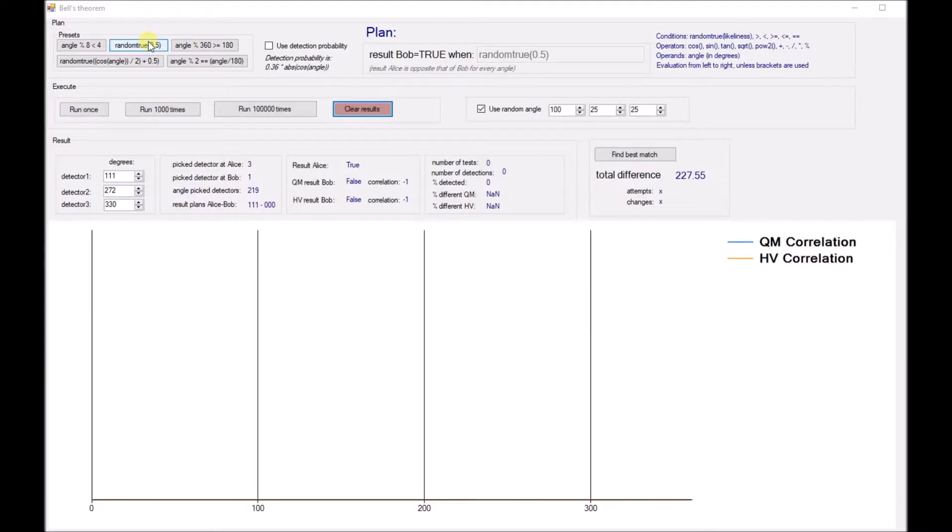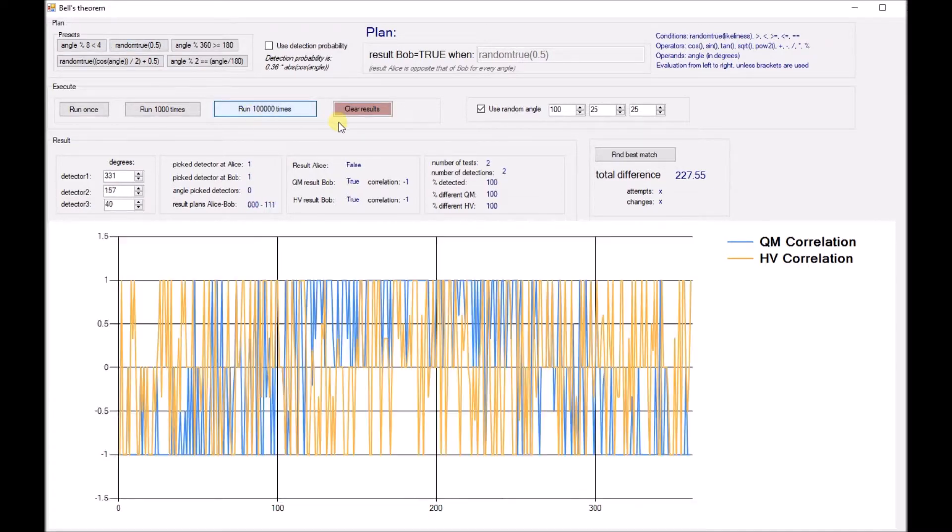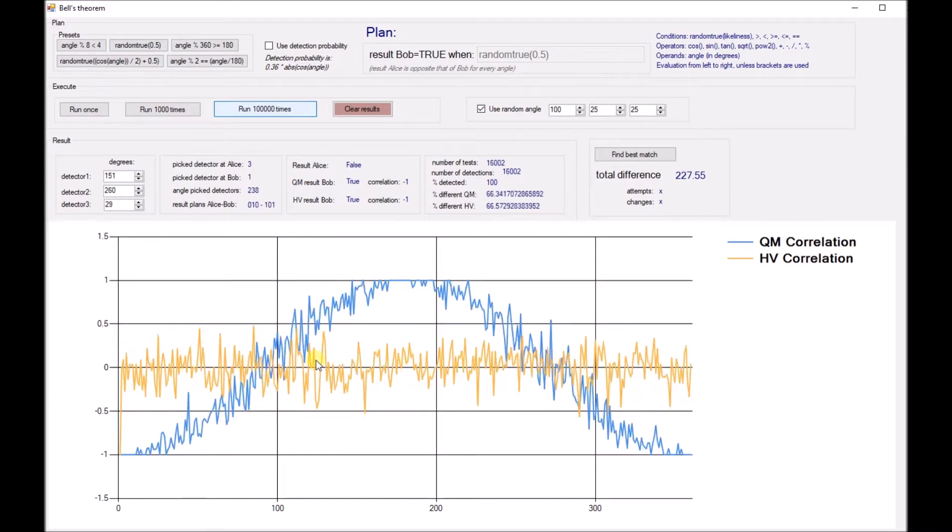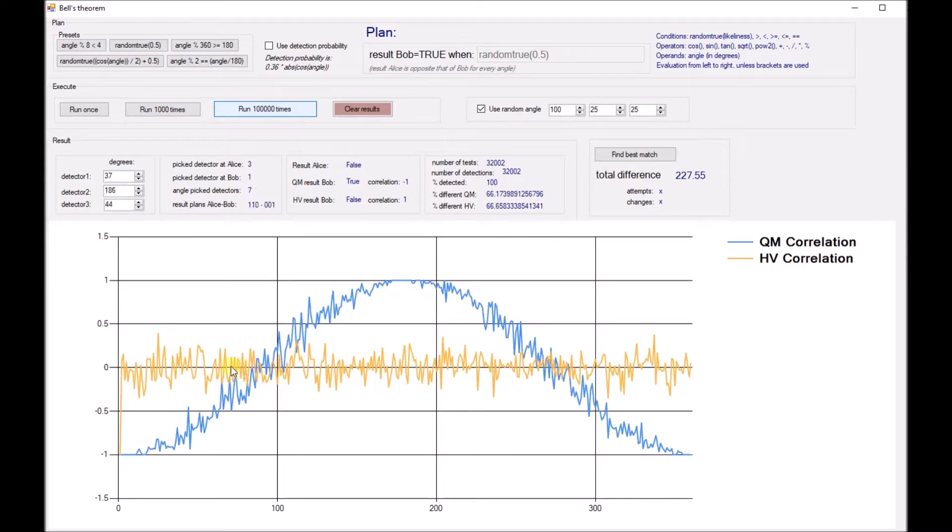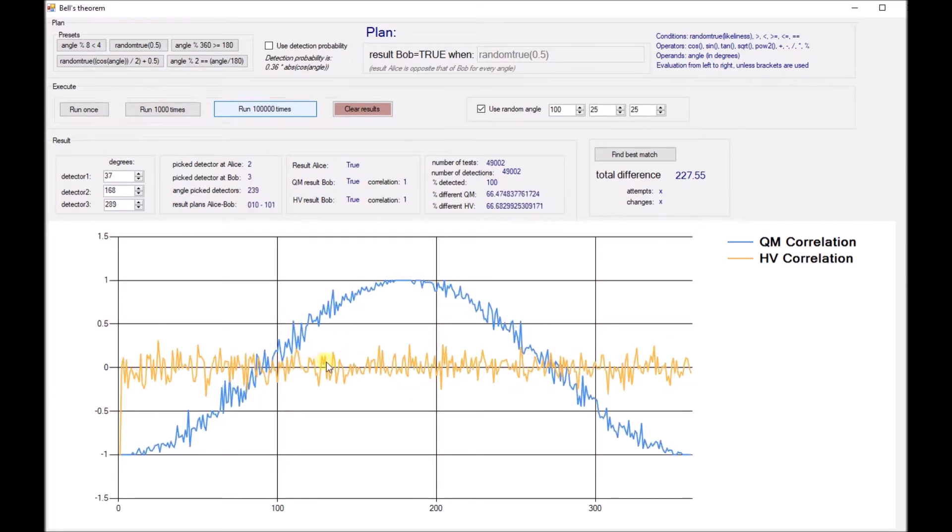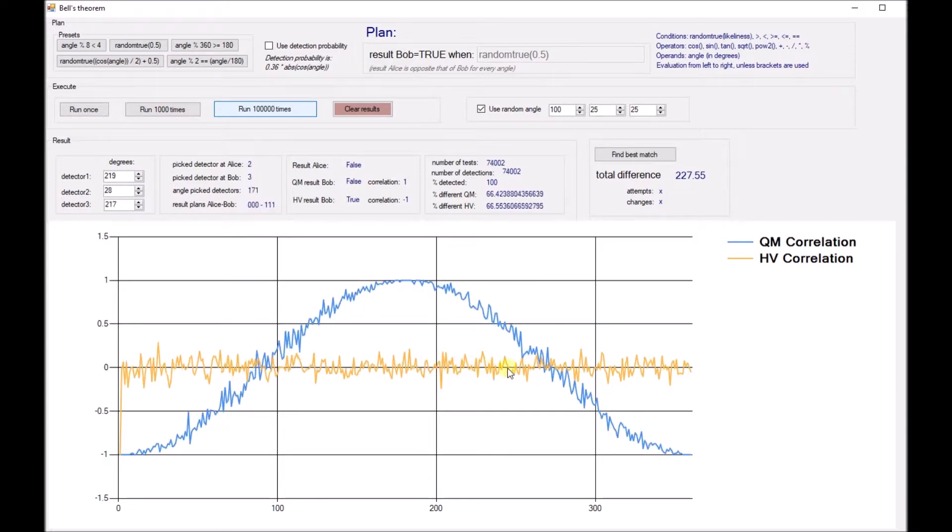To get an understanding of the results of the application, let's first look at a plan that simply yields a random value for each measurement. After many experiments, we see a graph with a correlation of zero at all angles, meaning it is sometimes the same, sometimes different, but never always the same or always different.